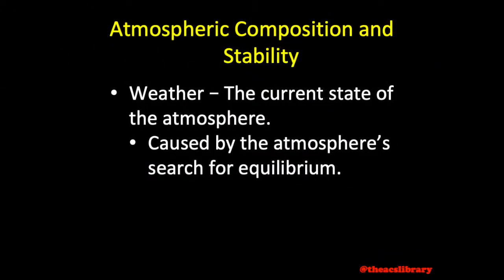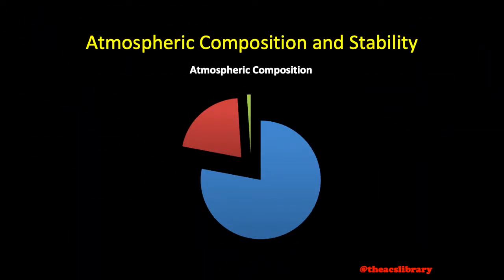Diving right in, weather may be defined as the current state of the atmosphere. The atmosphere is constantly trying to achieve equilibrium and in doing so, it creates constant motions that we know as the weather. In a perfectly dry world, the air around us is a mixture of gases, roughly 78% nitrogen, 21% oxygen, and about 1% of a mixture of other gases such as helium and carbon dioxide.